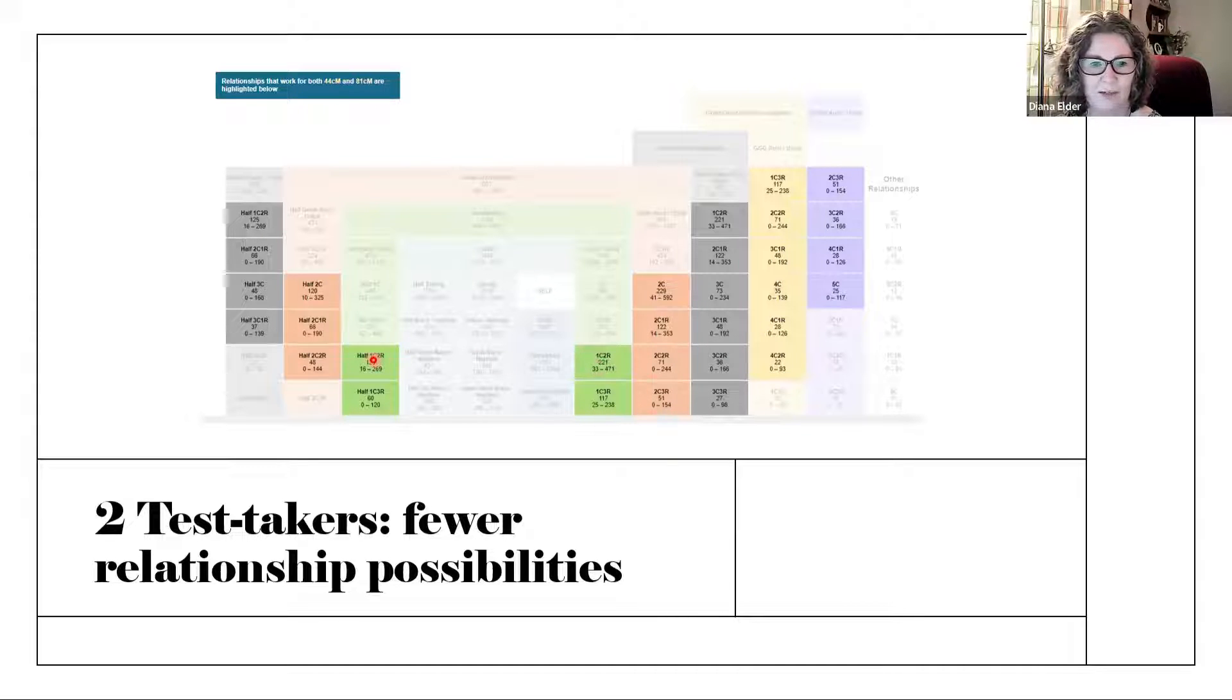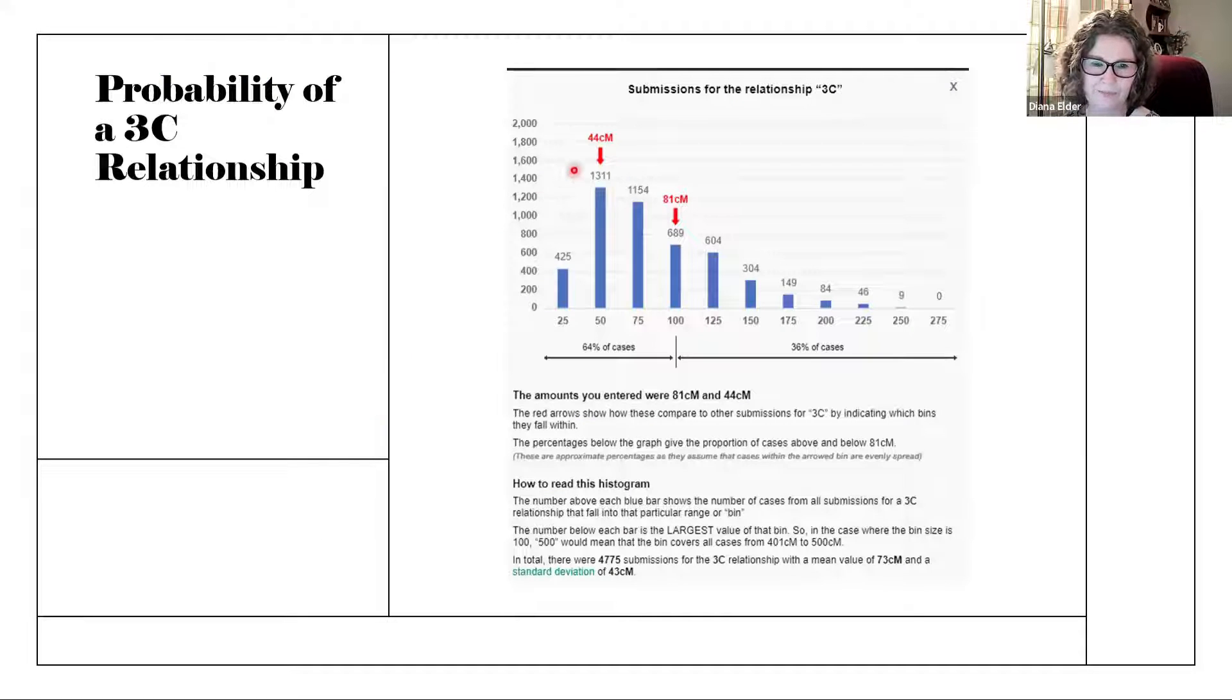For every single one of these relationships, you can click on it to see the histogram. And what I'm looking for is a histogram that shows both of my people with a fairly good amount. So for example, here is the histogram for third cousins. So if we have my two test takers right here, one sharing 81 centimorgans, one sharing 44 centimorgans, you'll see that there are a lot of people who have said that this is right there in their relationship for third cousins. They have reported this amount of DNA that falls within this bin. And we can see this is a fairly good guess.